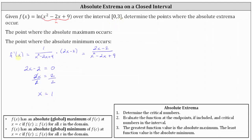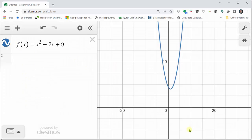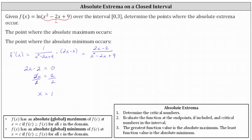We also need to consider where the first derivative might be undefined, which would be where we have division by zero — where x squared minus two x plus nine equals zero. However, looking at the graph of y equals x squared minus two x plus nine, we can see it does not intersect the x-axis, and therefore has no real zeros. This means there are no real numbers for which the denominator equals zero or the first derivative is undefined.